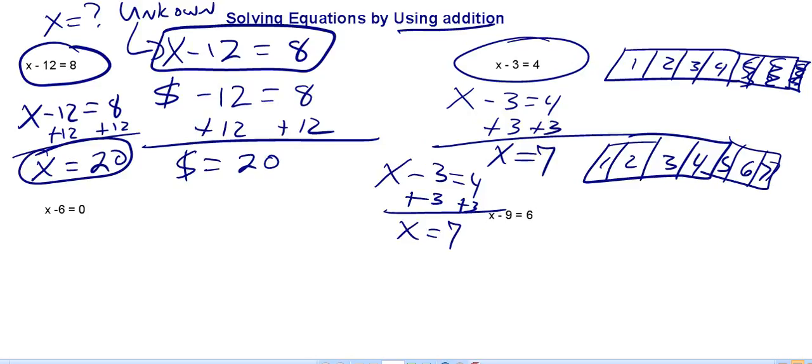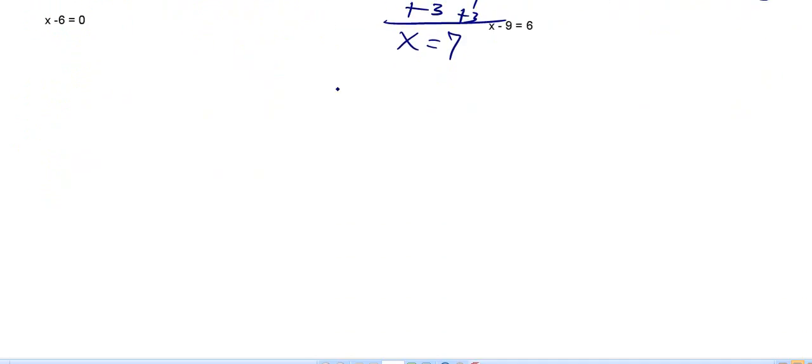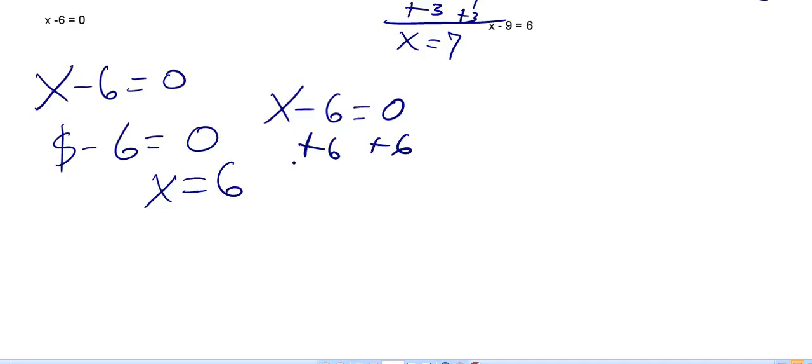We got x minus 6 is equal to 0. So I started off with some money, spent 6 bucks, and now I'm broke. How much money did I spend? I spent $6. And we still do this by using our inverse operations. You got x minus 6 is equal to 0, add 6 to both sides, x is equal to 6.